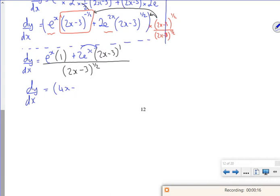So what I've got is 4x minus 5, I think I've lost my question. Yeah. E to the x all over 2x minus 3 to the 1/2, there you go.